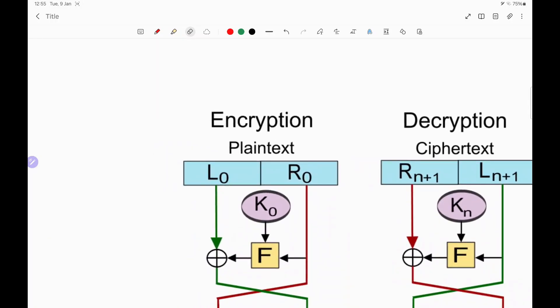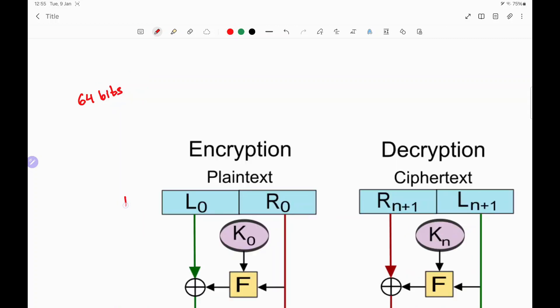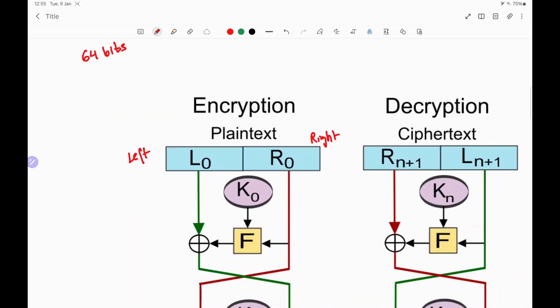Whatever be the plain text size, I am just taking a number 64 bits. So whatever be the size of the plain text, for example 64 bits, that is divided into two equal sized halves. That is the left half over here and the right half over here. So these are the two halves of the plain text.